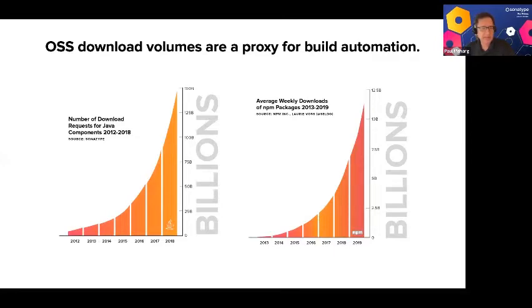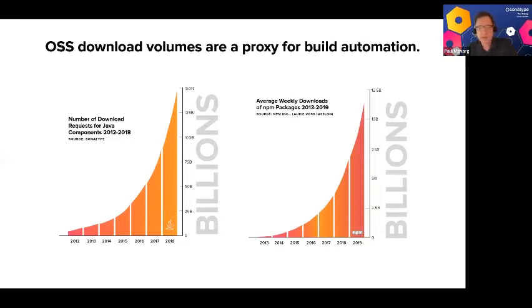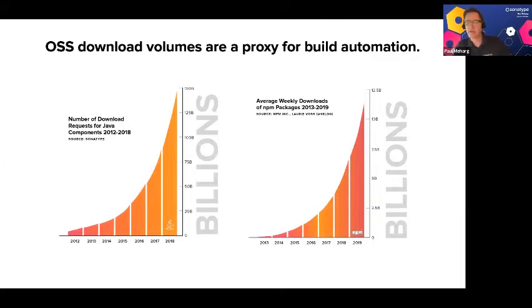Looking at the volume of open source across popular ecosystems like Java and NPM: over the last five or six years, annual downloads of Java components are approaching 150 billion. Weekly downloads of NPM packages are approaching somewhere between 10 and 12 billion per week. We're seeing exponential growth.